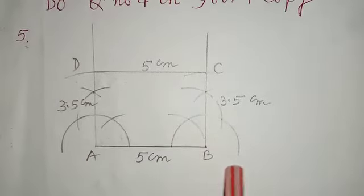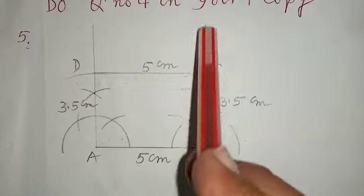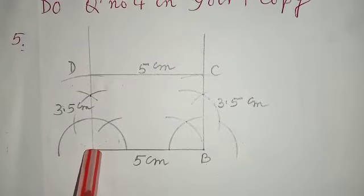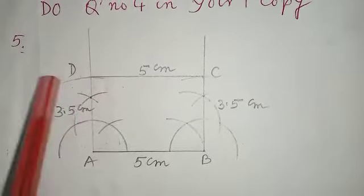At B again we will draw an angle of 90 degrees. With this line segment from A we cut an arc of 3.5 cm and we get a point D.